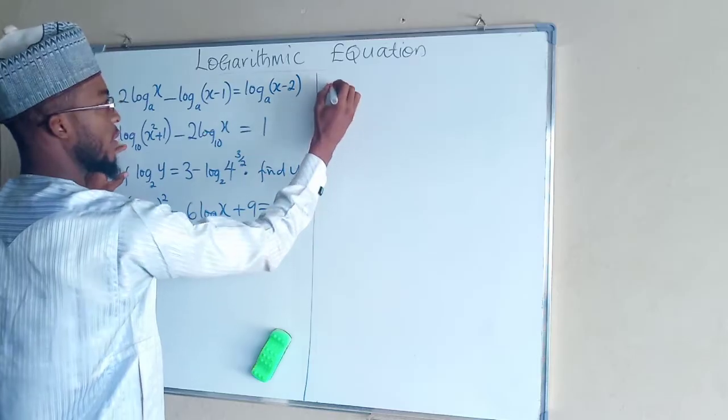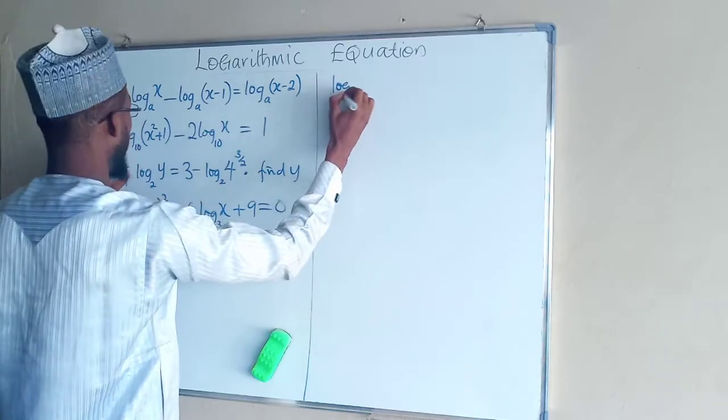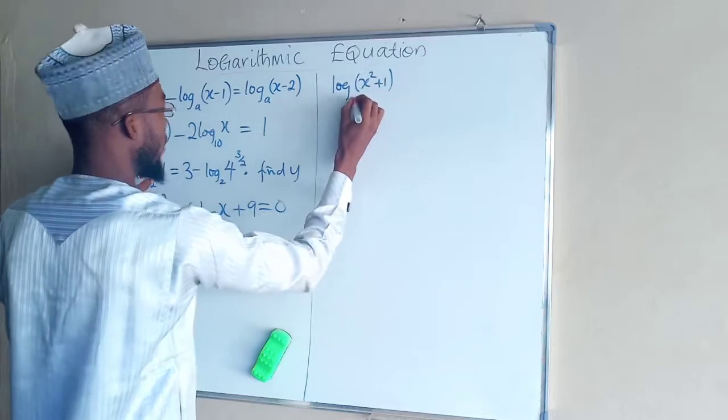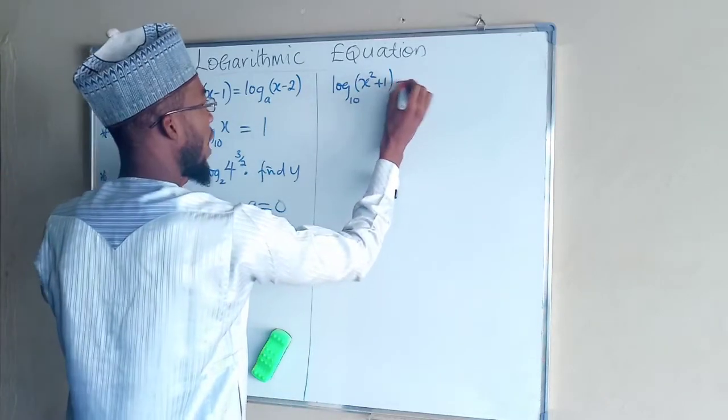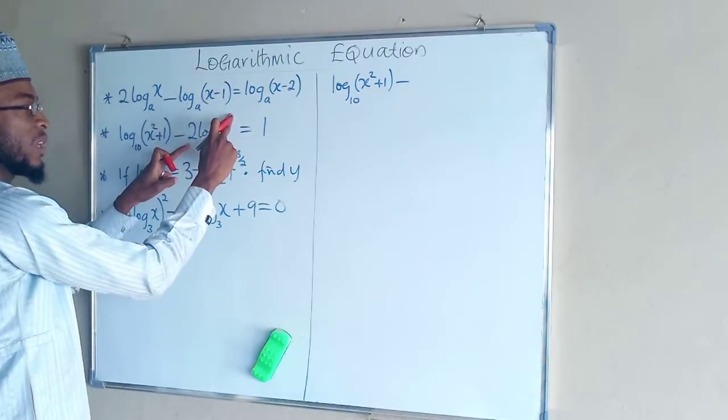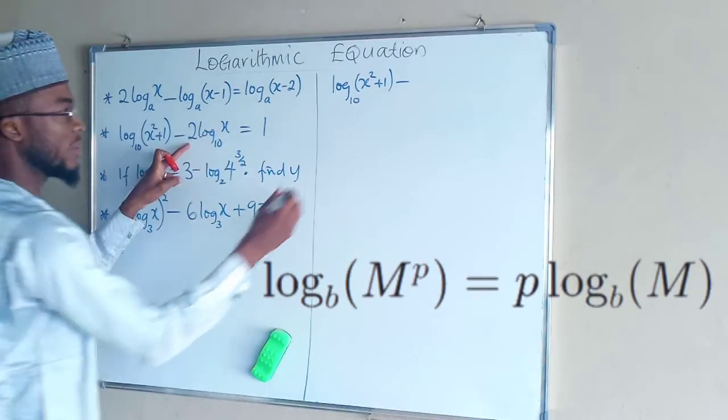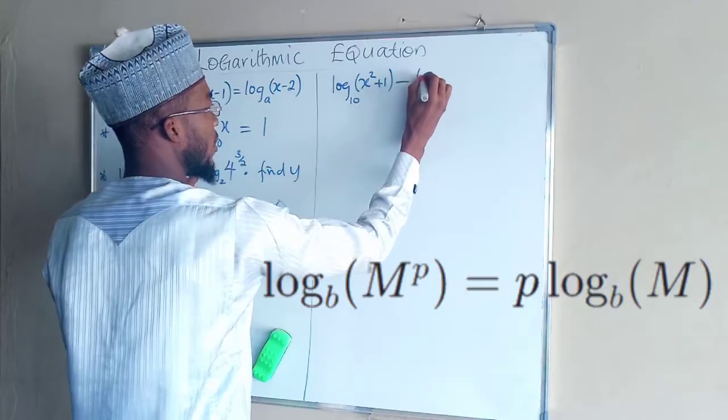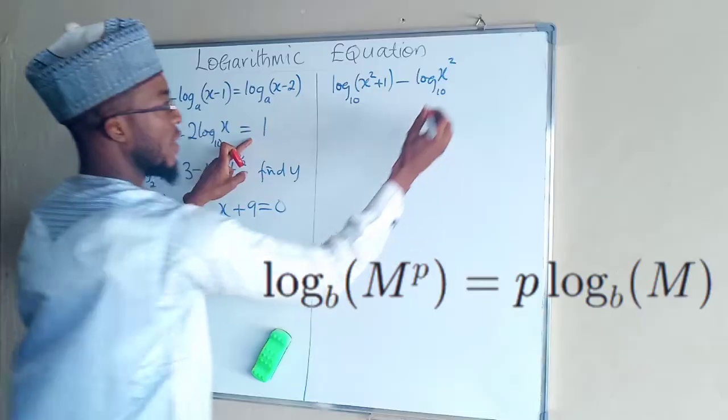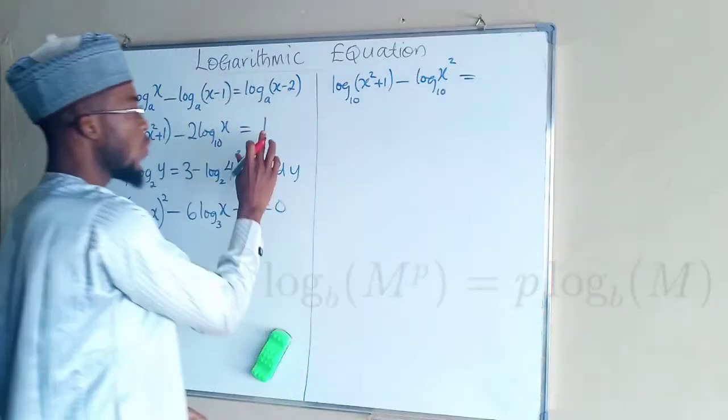Again you can rewrite this equation as log x squared plus 1 base 10 minus, these two can now combine and become a power of x. So log x power 2 by laws of logarithms, and this equals 1.